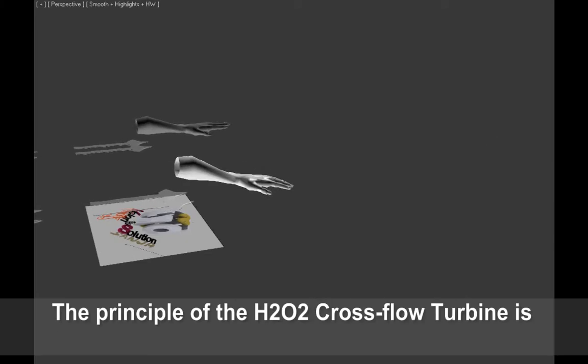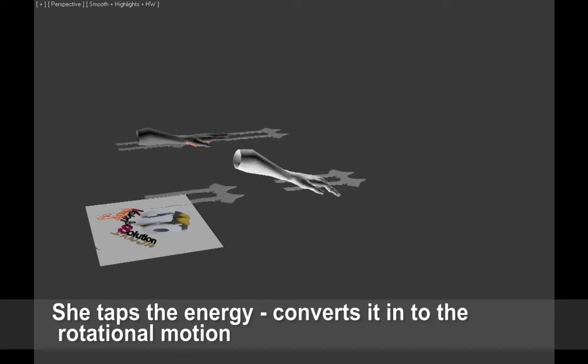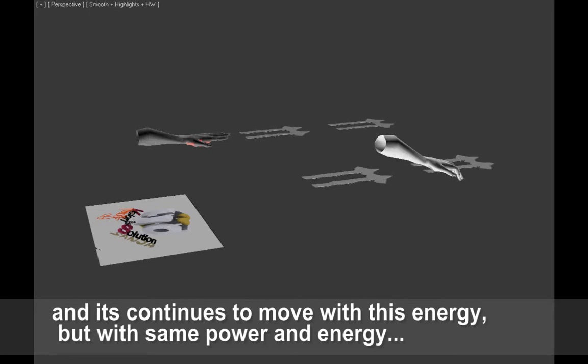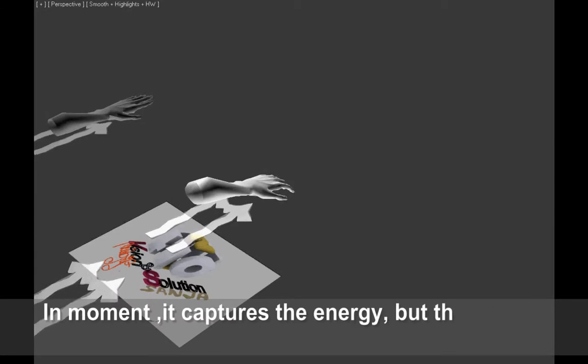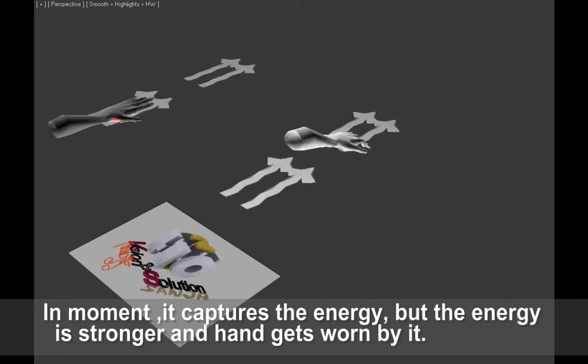The principle of the H202 cross flow turbine is stunning. She taps the energy, converts it into the rotational motion and continues to move with this energy. But with same power and energy like this hand. In the moment it captures the energy, but the energy is stronger and hand gets worn by it.